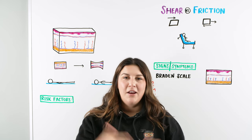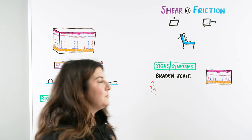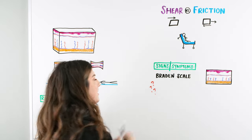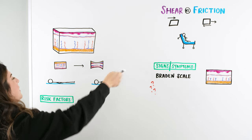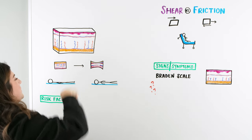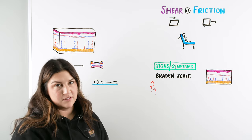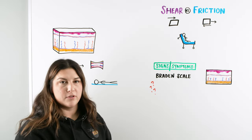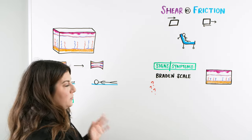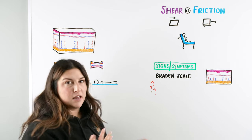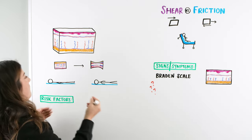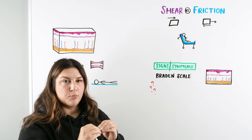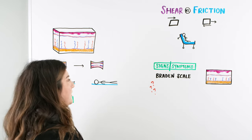Let's start talking about pressure injuries and how these occur within our patients. When we have a patient who's immobile, there's a force of pressure that is exerted within our skin. Our integumentary system has a capillary bed, and we have perfusion to this area of skin. When a patient is immobile for a long period of time, that constant pressure on the skin can cause capillary compression, and that capillary compression can cause ischemia to that area.